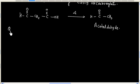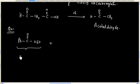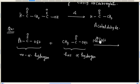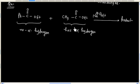Now let us consider another cross-Claisen condensation. So this time we have an ester, and this ester does not have any alpha hydrogen. And we have another ester that has alpha hydrogen. So we have an addition product in this case. Initially we generate the carbanion, and this carbanion will attack on the ester.